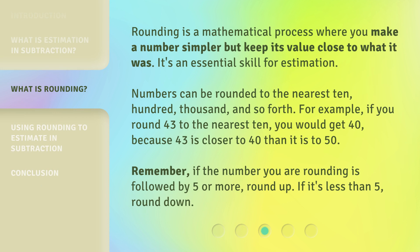Rounding is a mathematical process where you make a number simpler but keep its value close to what it was. It's an essential skill for estimation. Numbers can be rounded to the nearest ten, hundred, thousand, and so forth. For example, if you round 43 to the nearest 10, you would get 40, because 43 is closer to 40 than it is to 50. Remember, if the number you are rounding is followed by 5 or more, round up. If it's less than 5, round down.